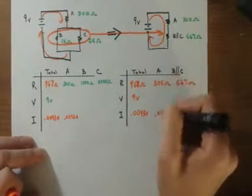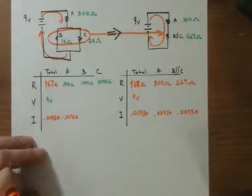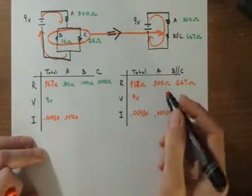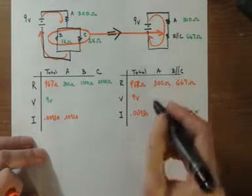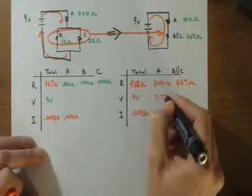I can use Ohm's law here, or here, to get the voltage drop across resistor A. V equals IR gives me 2.79 volts.